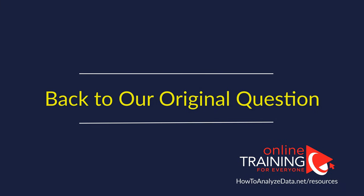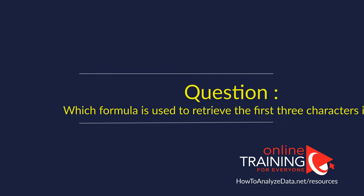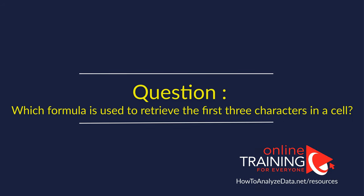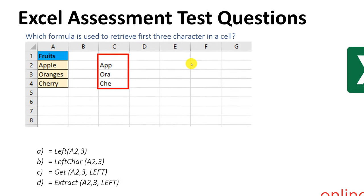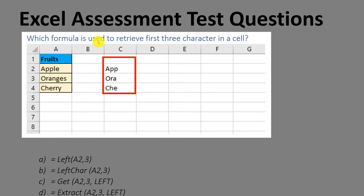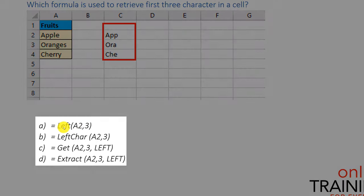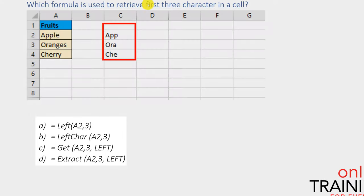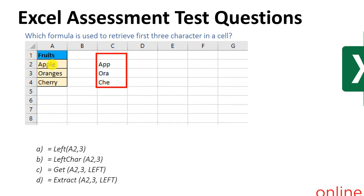Now let's go back to our original question and I'll show you how to come up with the right answer. Very frequently, you are tested on your knowledge of Excel formulas. This is one of those questions where you will be asked which formula is used to retrieve the first three characters in a cell. You're given four different choices: Left, Left Char, Get, and Extract. First three characters in a cell means it's probably going to be on the left side.